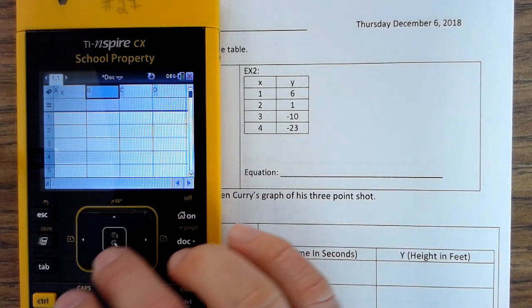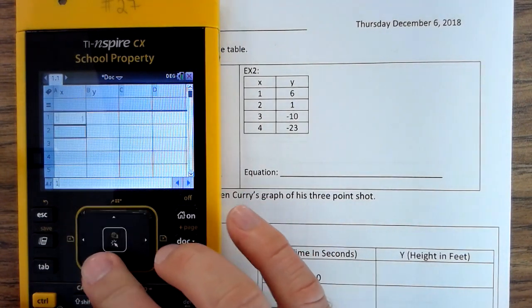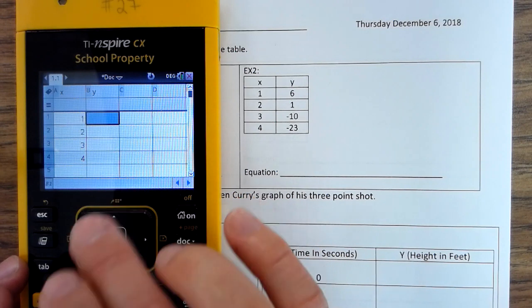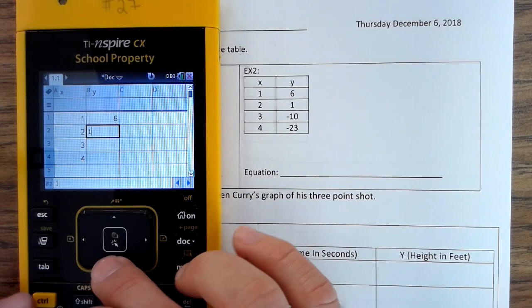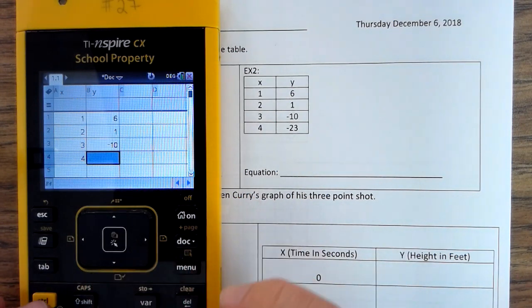X, Y, 1, 2, 3, 4, 6, 1, negative 10, negative 23.